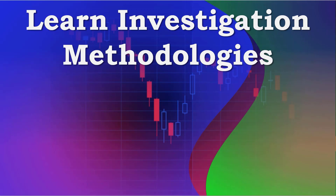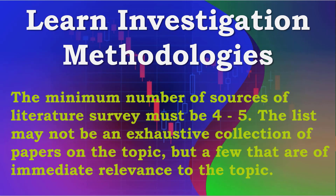The basic idea of this part of the seminar is to acquaint the student with methods of carrying out a literature survey on a given topic. Methods of literature survey can include journal holding index search, books, internet searching, journal and conference websites. Guide providing all the relevant literature defeats the above purpose. Some basic instructions on where and how to begin the search may be provided by the guide. The minimum number of sources of literature survey must be 4 to 5. The list may not be an exhaustive collection of papers on the topic, but a few that are of immediate relevance to the topic.